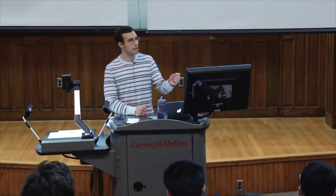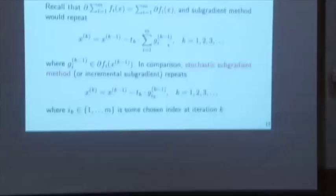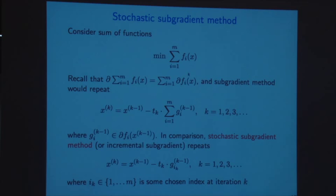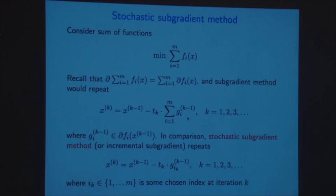The subgradient method computes the subgradient at every iterate. If we're at x_{k-1}, we compute a subgradient of the criterion function at x_{k-1}. The subgradient of a sum can be taken as the sum of subgradients — that was one of our rules. So we compute the subgradient of each f_i, calling that g_i, evaluated at x_{k-1}, and move in that direction. That could be very costly because M could be large.